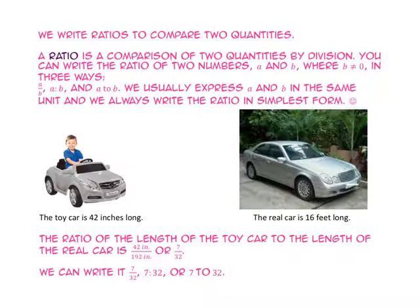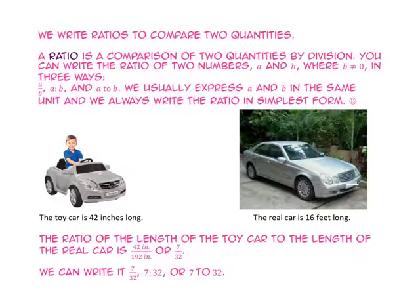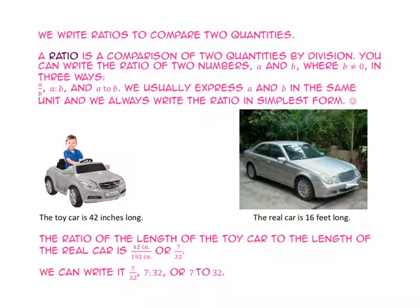Let's use a ratio to compare the lengths of a toy car and a real car. The ratio of the length of the toy car to the length of the real car is 42 inches to 192 inches, because we have converted 16 feet into inches. In simplest form, that ratio would be written 7 to 32. Again, we can write it in fraction form, with a colon, or with the word 'to.' Each one of these reads 7 to 32.